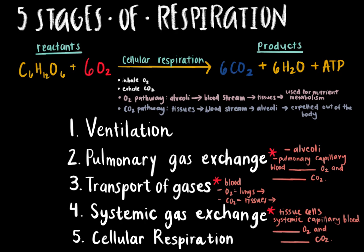This reaction occurs at the tissue cells to produce energy. Because oxygen is a reactant, it is constantly being consumed and thus its concentration decreases inside the tissue cells. On the other hand, carbon dioxide is a product and thus it is constantly accumulating inside the tissue cells. This creates a pressure gradient which will be discussed shortly.